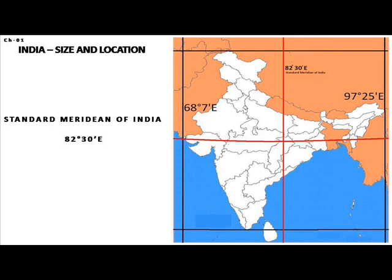We have selected 82 degrees 30 minutes East as our standard meridian because it is completely divisible by seven and a half — a standard adopted by international agreement. Another reason for selecting 82 degrees 30 minutes East is that it runs through the center of India.